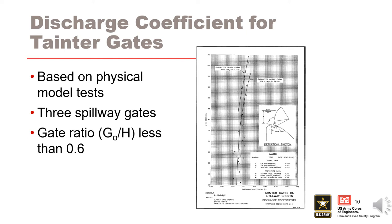The discharge coefficients for tainter gates were developed generally from a set of physical model studies that each had three or more spillway gates in operation. The discharge coefficients for operation of a single gate would be a bit lower than these values because of the effects of pier contractions. The coefficients are believed to be reasonably accurate for gate opening ratios less than about 0.6. Calculated discharge estimates will generally be less accurate outside of these parameters. Always keep in mind it's important to understand where the coefficients come from and what limitations might exist.